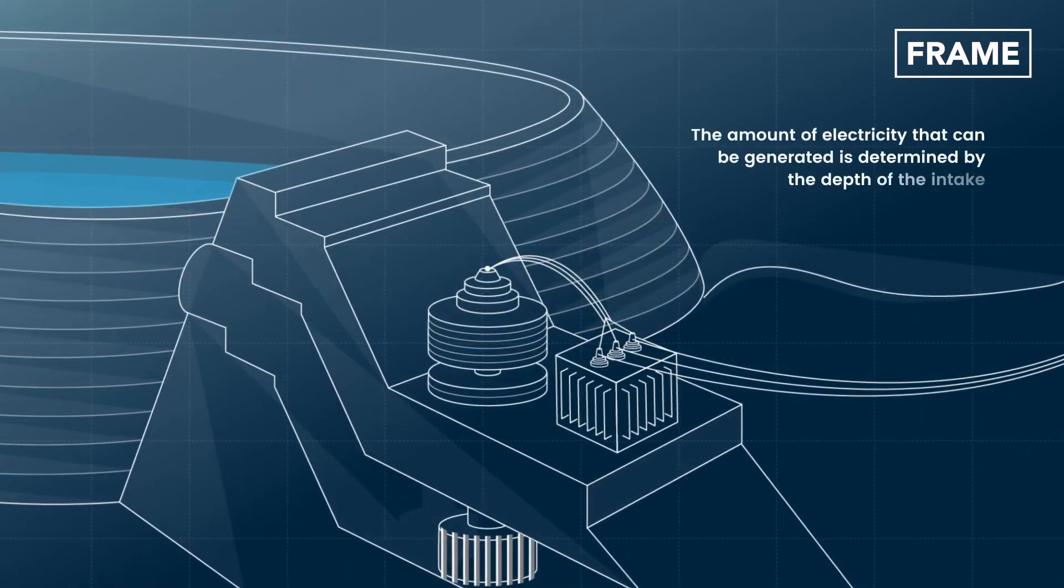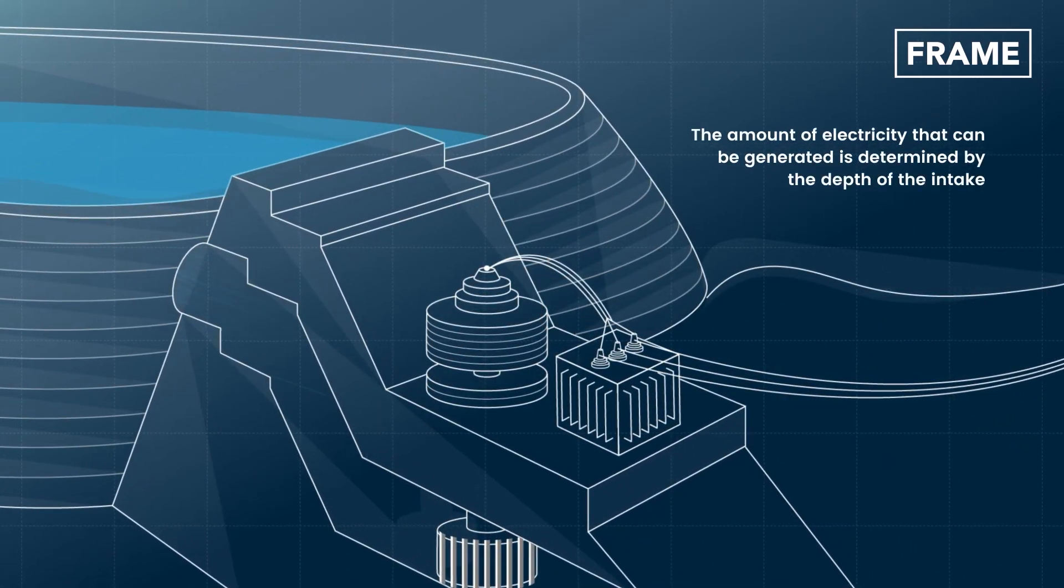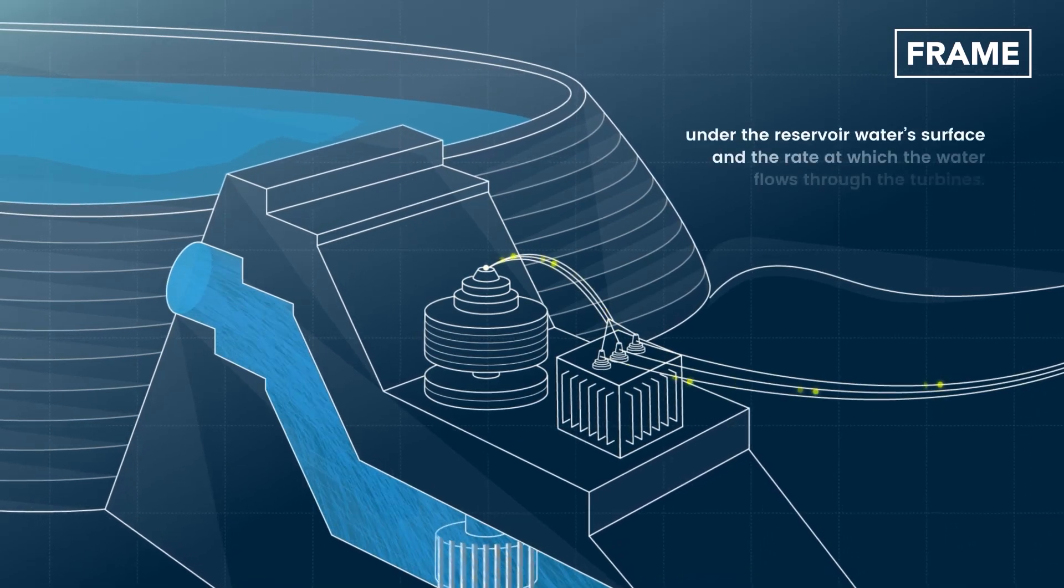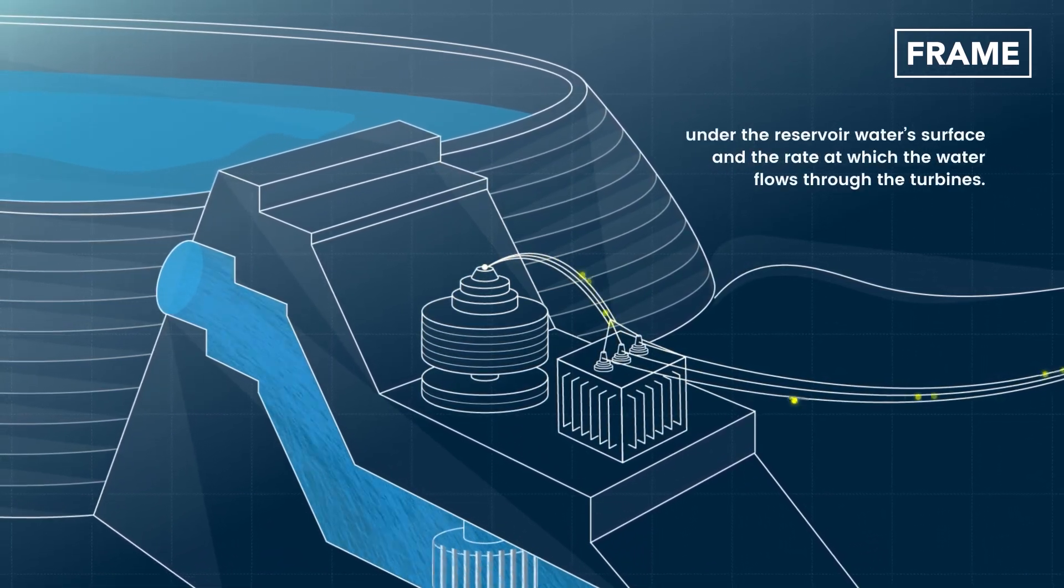The amount of electricity that can be generated is determined by the depth of the intake under the reservoir's water surface and the rate at which the water flows through the turbines.